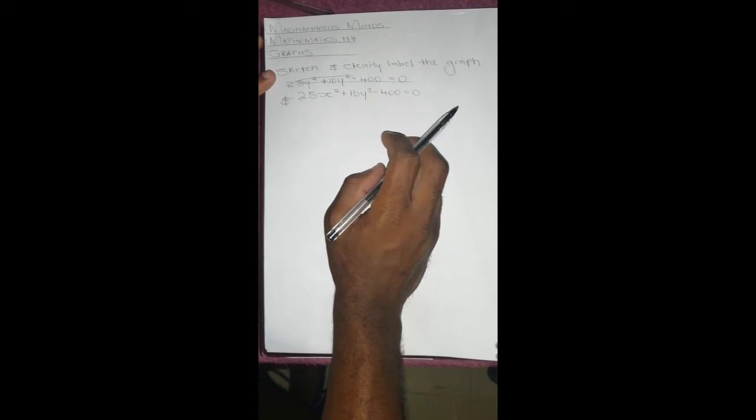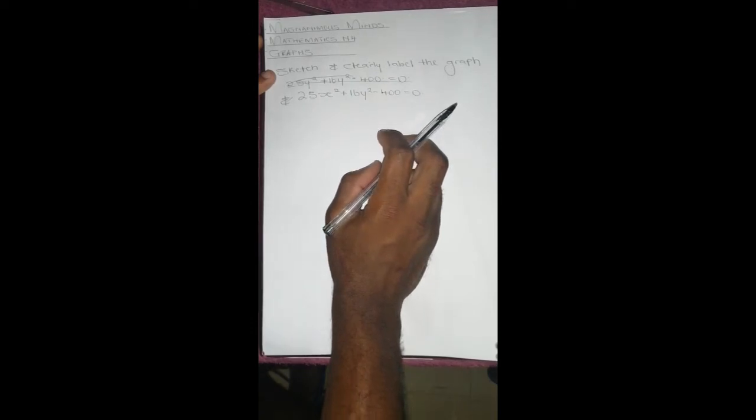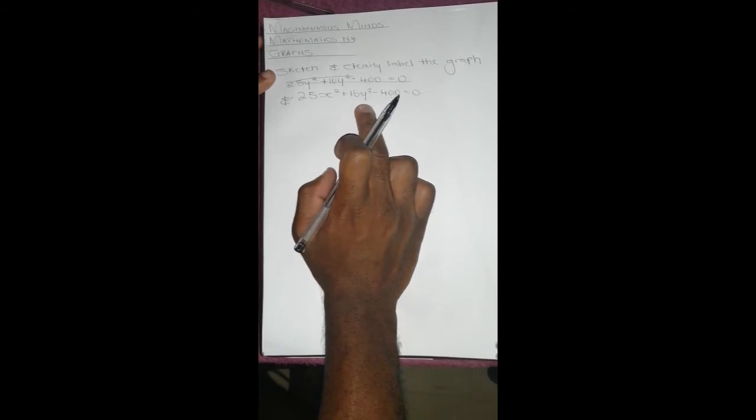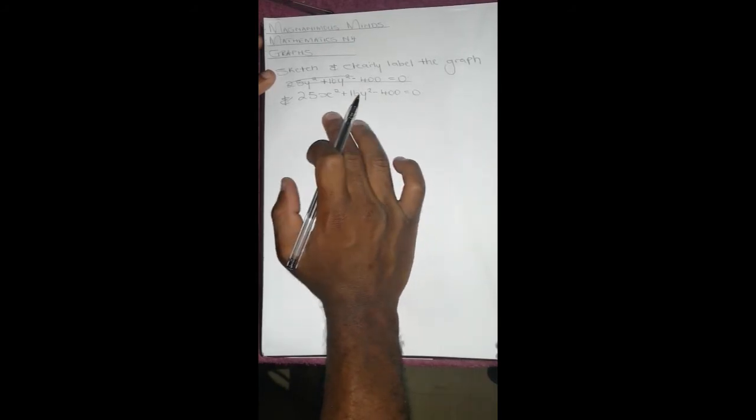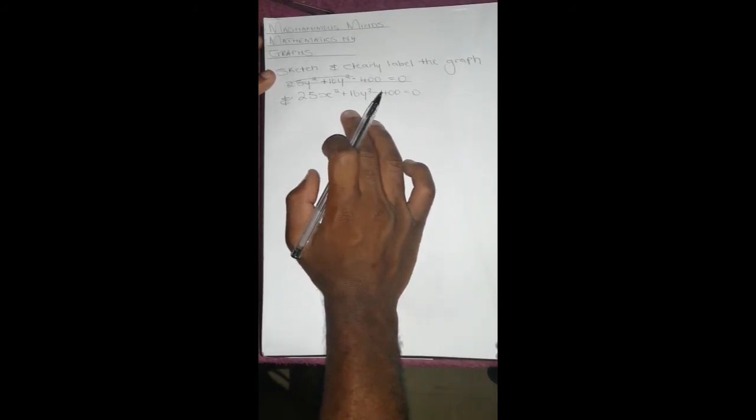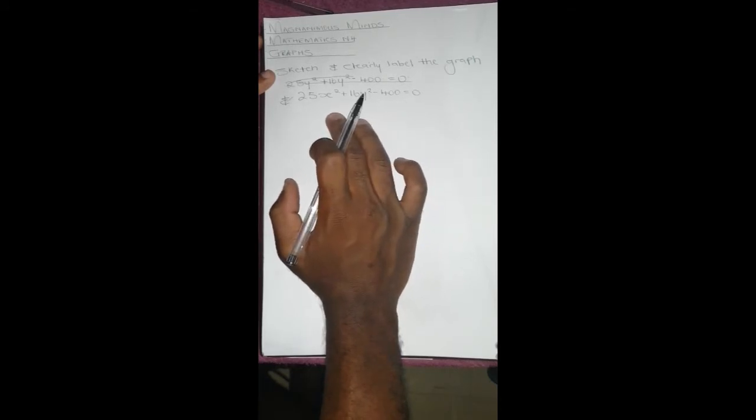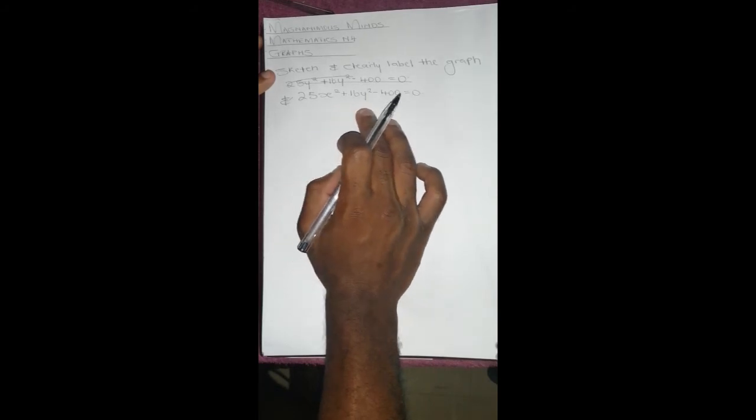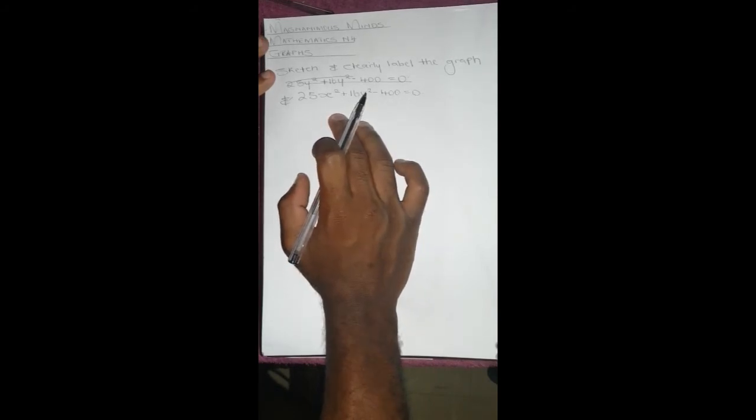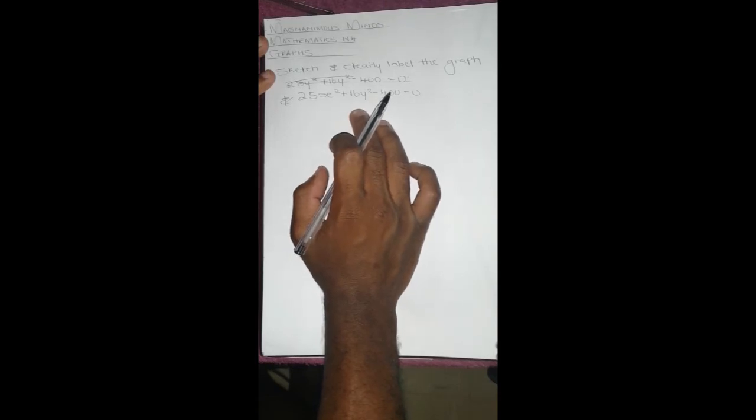Just by taking 25x² and 16y², we can tell that this graph is an ellipse because it can't be a circle. No matter what number we divide by, we are not going to be left with x² + y² as it is. We're going to be left with x having a coefficient and y having a coefficient. So for them to be left with a coefficient, it means this is an ellipse.